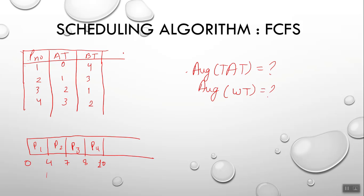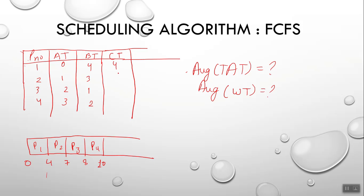The Gantt chart shows time points 0, 4, 7, 8, and 10. Based on the Gantt chart, the completion times are: P1 = 4, P2 = 7, P3 = 8, and P4 = 10.